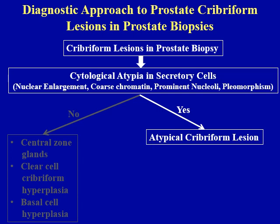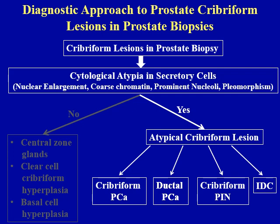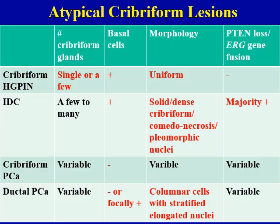When you look at prostate cribriform lesions and you do see cytologic atypia in secretory cells — nuclear enlargement, coarse chromatin, prominent nucleoli, and pleomorphism — then you are looking at atypical cribriform lesions. You need to think about four lesions: cribriform carcinoma, ductal carcinoma, cribriform high-grade PIN, and intraductal carcinoma. To distinguish between these four lesions, you need to pay attention to four pathological features: number of cribriform glands, whether basal cells are present or not, morphology of the atypical cribriform lesions, and PTEN loss and ERG gene fusion.